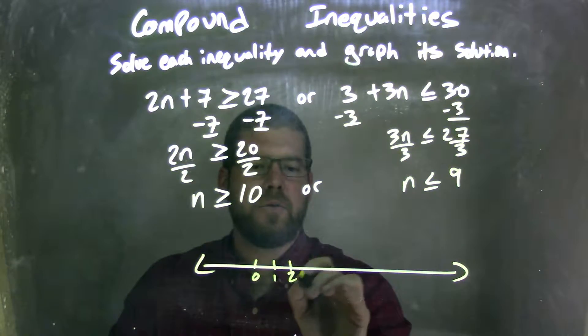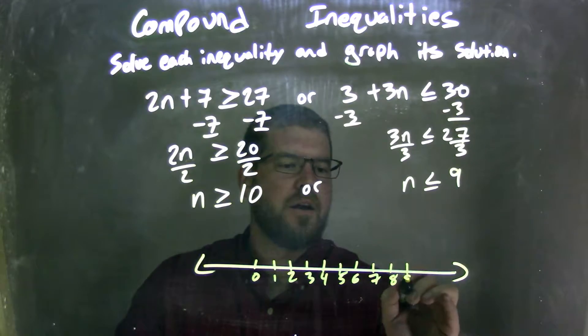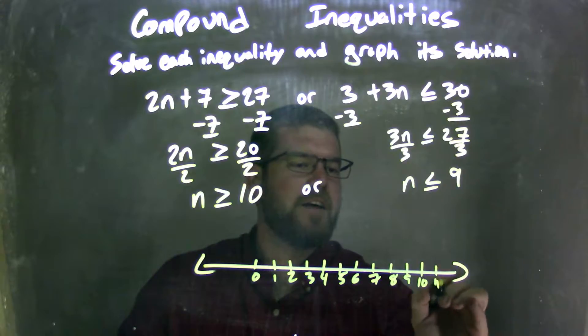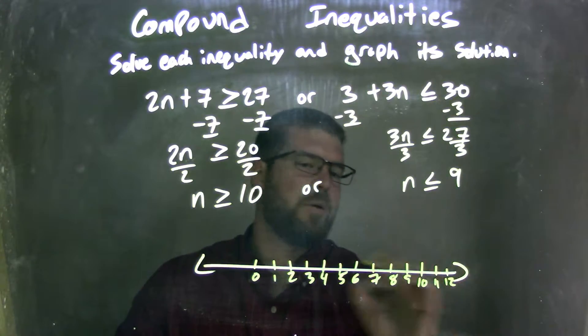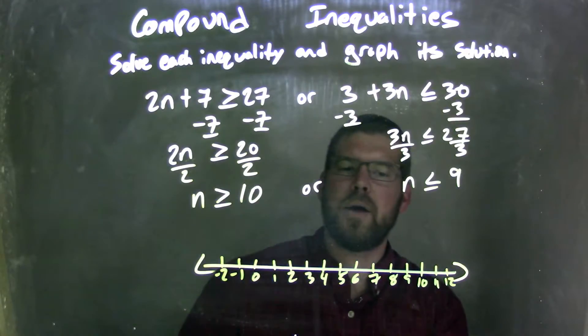0, 1, 2, 3, 4, 5, 6, 7, 8, 9, 10, 11, 12. And we really don't care what's going on here, but negative 1, negative 2. Probably could have made it a little better, but it's all good.